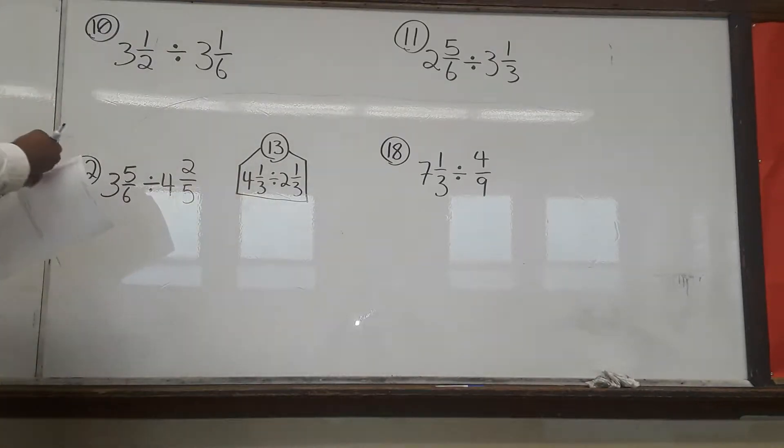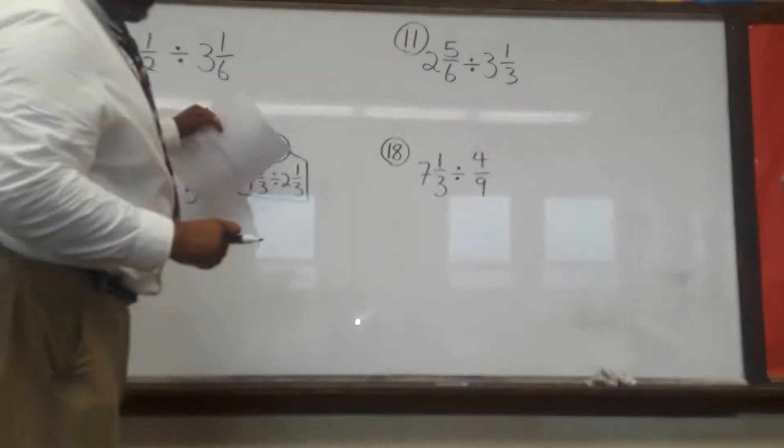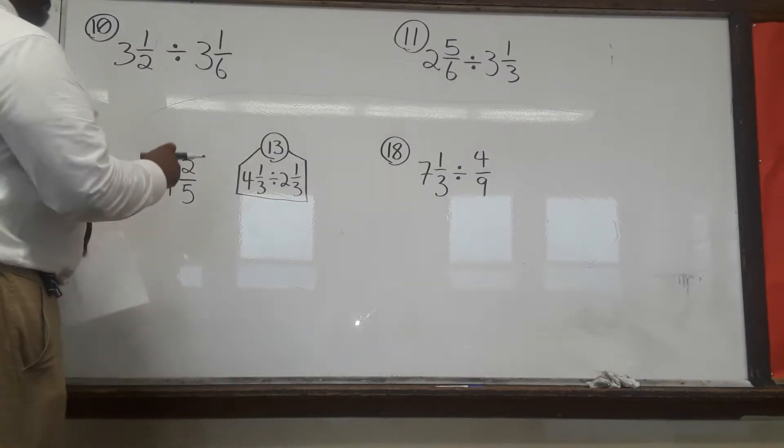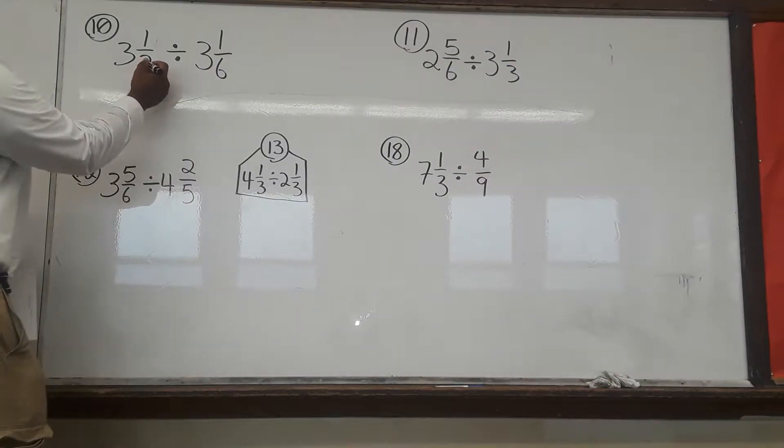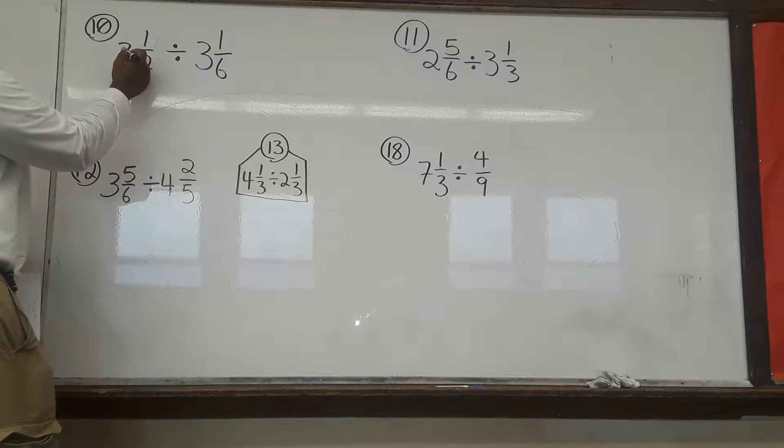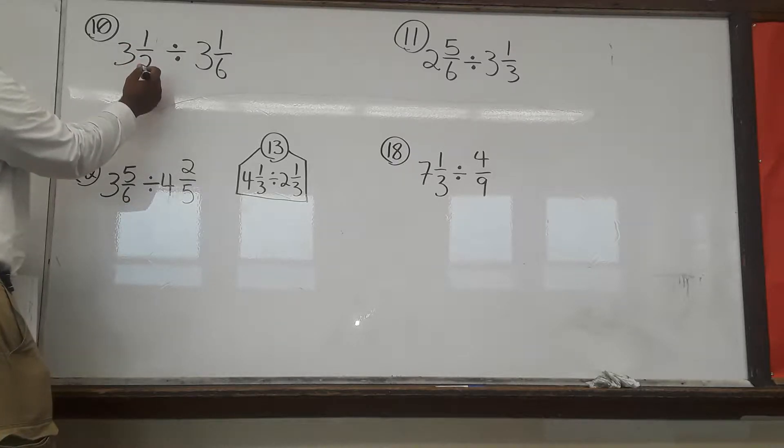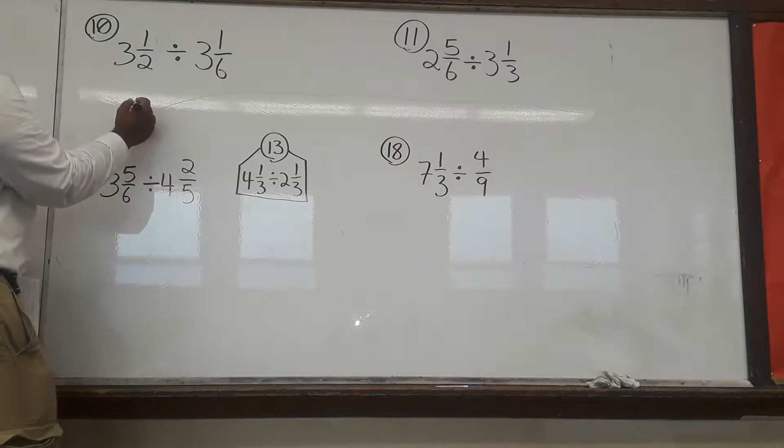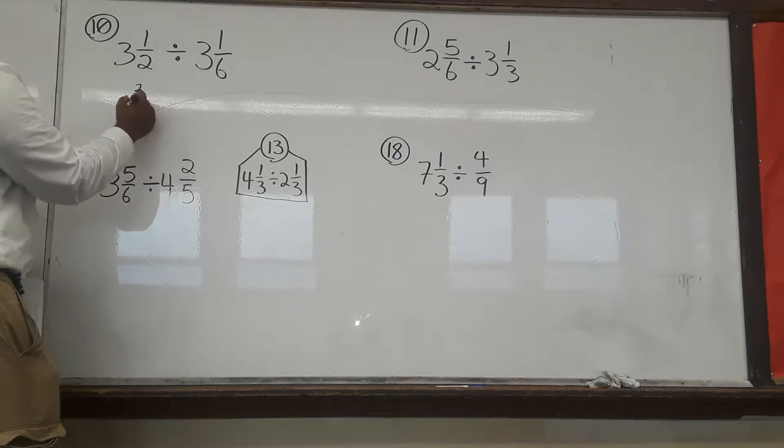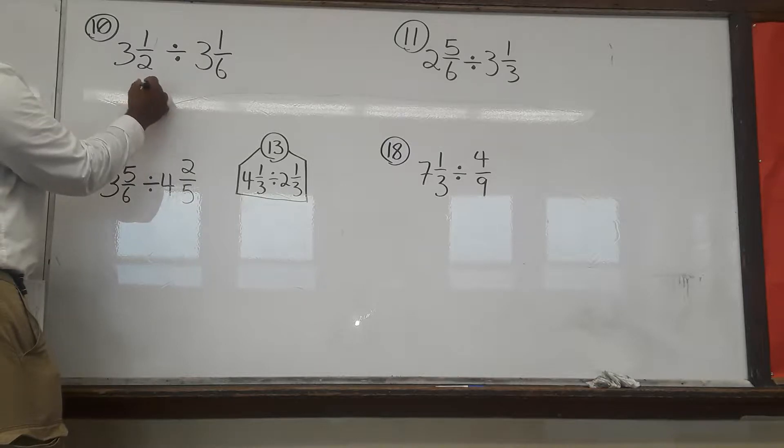So, number 10, remember the first thing we have to do is convert these mixed numbers to improper fractions. Our strategy for that is our denominator times our whole number plus our numerator over the denominator that's already there. So, 2 times 3 gives us 6, 6 plus 1 gives us 7, and that's going to be over the top of the 2 that's already there.